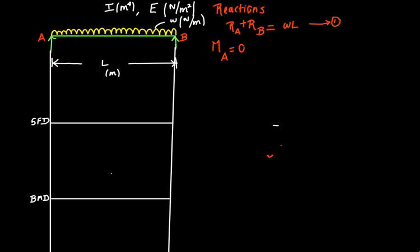So let us find the moment. In order to find the moment, let us first find the moment due to the UDL. The entire UDL can be assumed to act at the centroid. Because the loading is perfectly symmetrical and uniform, the centroid is going to be at the center. That is represented by the dashed white arrow. The distance from the center to point A is obviously L by 2, and the total load due to the UDL is W into L.